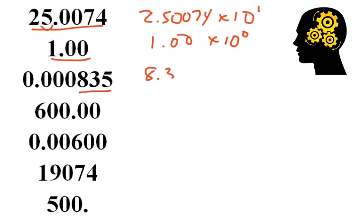Three significant figures, 8.35, and it's smaller than 1, so it's a negative exponent. And it's 1, 2, 3, 4 times it got moved, so 10 to the negative 4.